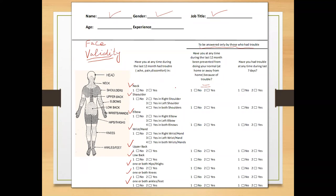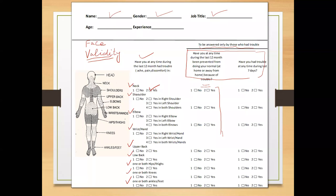The face validity regarding the arrangement of the questions could be better than what is shown, but the purpose of having questions side by side is to make it easy to fill. For example, if the answer is yes to the first question, then the person has to choose from the subsequent options. If the answer is no for the first question, then those follow-up questions clearly do not need to be filled.